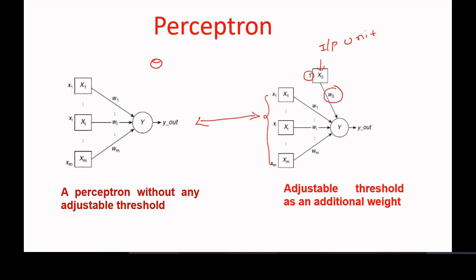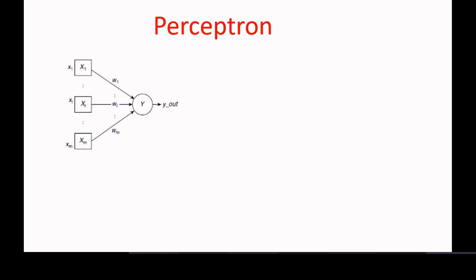To summarize the differences between the McCulloch-Pitts neural model and the perceptron: first, in the perceptron the weights are not the same — weights are different — whereas in the McCulloch-Pitts neural model the weights are always the same. Second, the perceptron has a learning ability, which is not the case for the McCulloch-Pitts neural model. Third, the perceptron has an adjustable threshold, whereas in the McCulloch-Pitts neural model the threshold is always fixed.